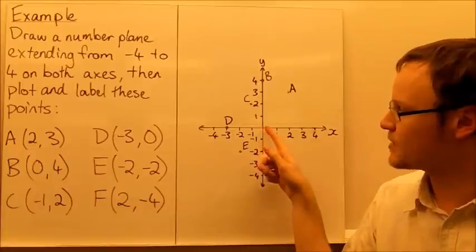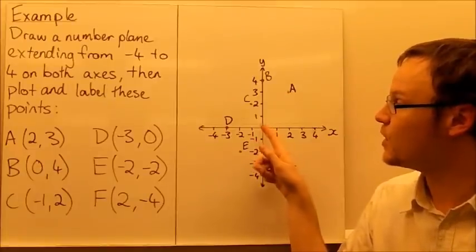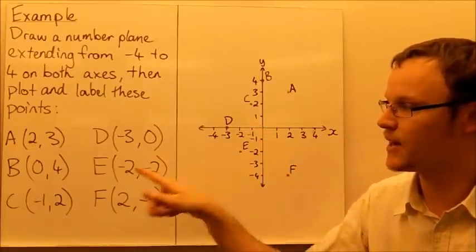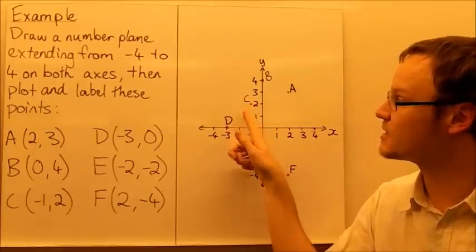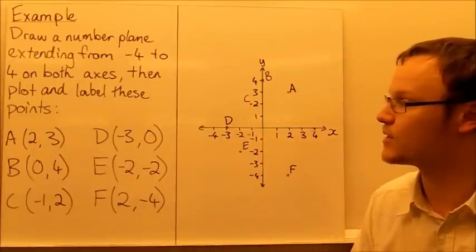C, negative 1, so we need to first move 1 down the x plane, and then positive 2 up. So negative 1, 2, and we see C is placed there at (-1,2).